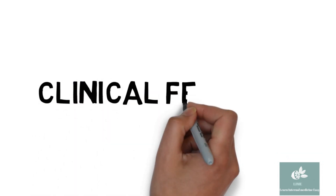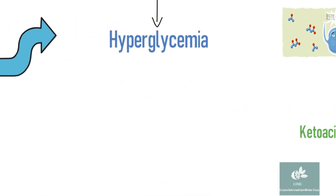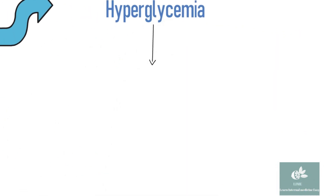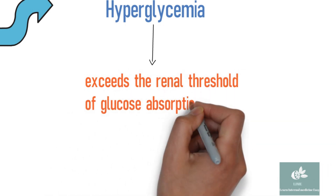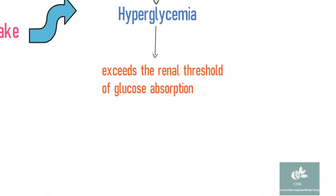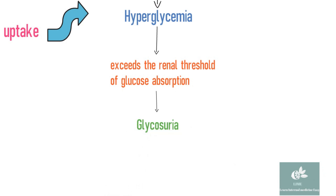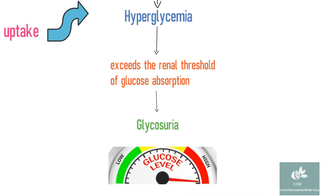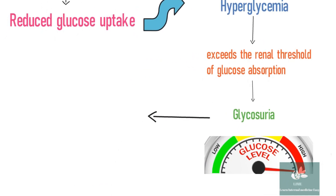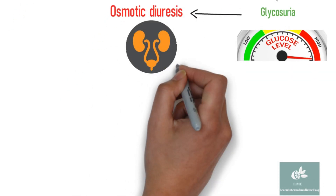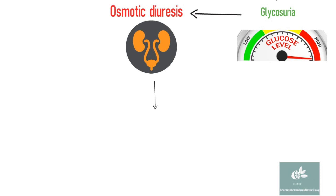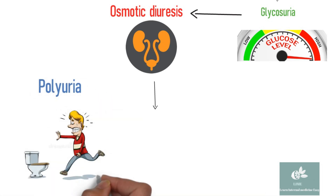Clinical features of DKA usually develop over 24 hours. Hyperglycemia usually exceeds the renal threshold of glucose absorption, resulting in significant glycosuria. Glucose being an osmotic substance results in osmotic diuresis. Consequently, increased loss of water due to osmotic diuresis results in polyuria and polydipsia.